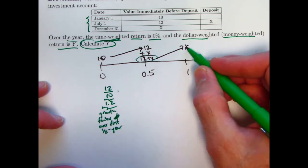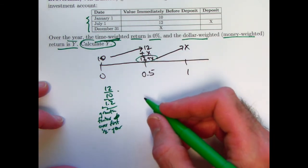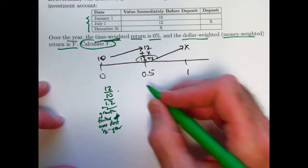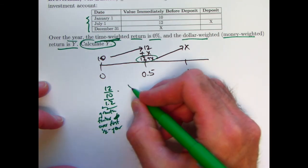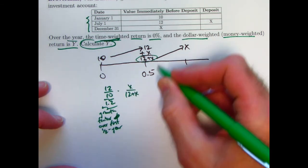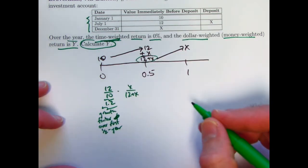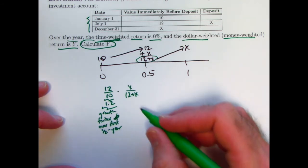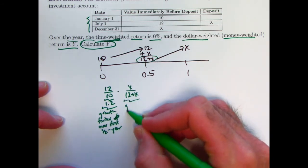it grows, so to speak, from 12 plus x to x, meaning it really decayed. The growth factor is really going to be less than 1. It's going to be the ratio x, the ending value, divided by 12 plus x, the beginning value on July 1st, right after that deposit. This is going to be the growth factor for the second half year.